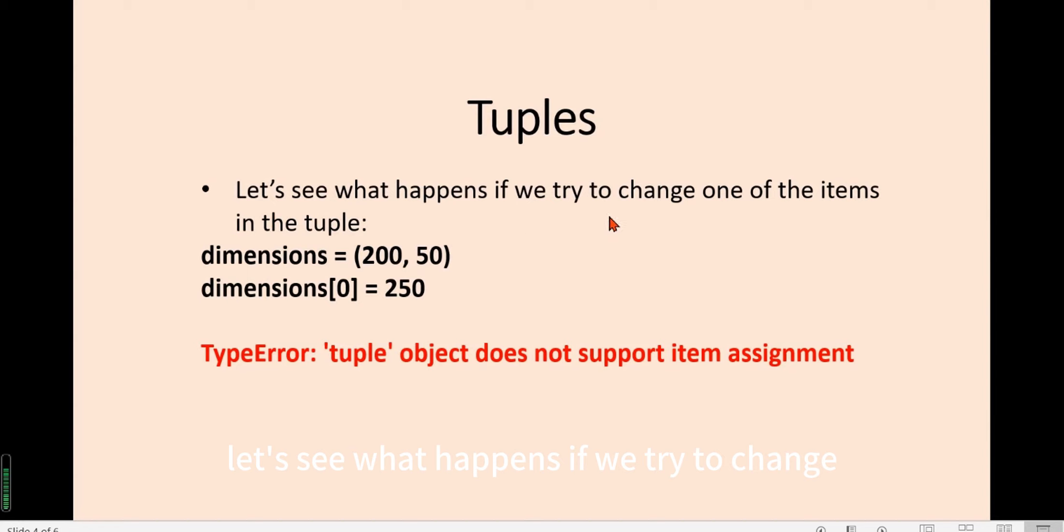Let's see what happens if we try to change one of the items in the tuple. So we create dimensions equals 200, 50, a two-element tuple, then we try to change the first item of the dimensions to 250. Python will print a type error which means tuple object does not support item assignment.